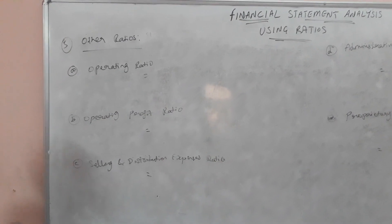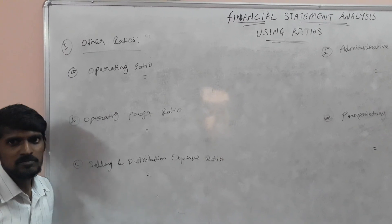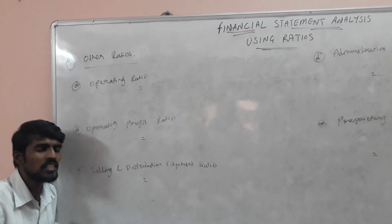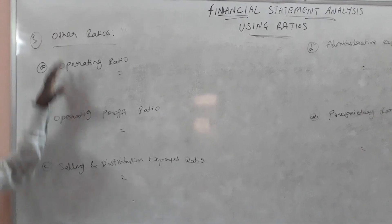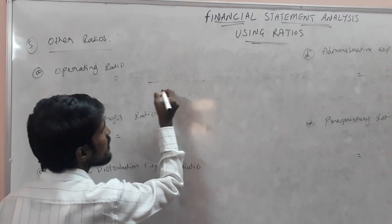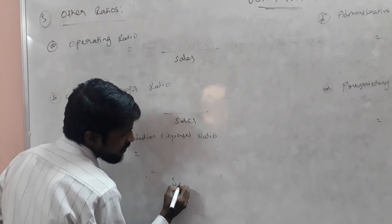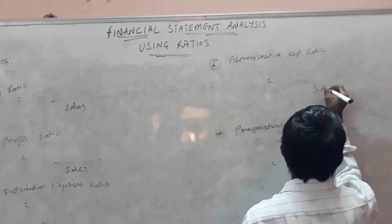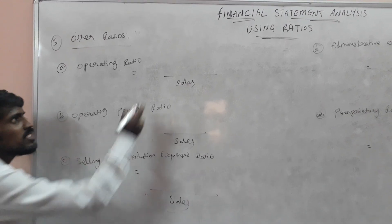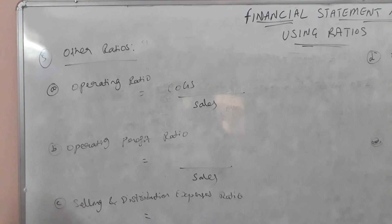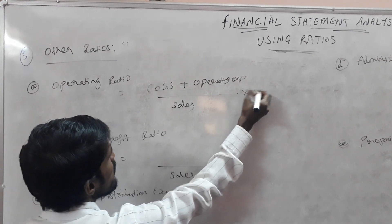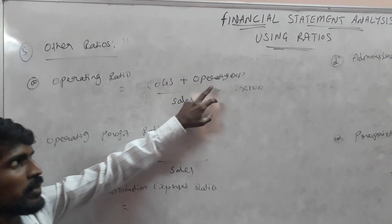Operating ratio means we have to find out all the operating expenses in the company. All the ratios here compare only with the sales. The formula for operating ratio deals with sales. Expenses include cost of goods sold — that is purchases, opening stock, and direct expenses — plus operating expenses. So the formula is: cost of goods sold plus operating expenses, divided by sales, into 100.